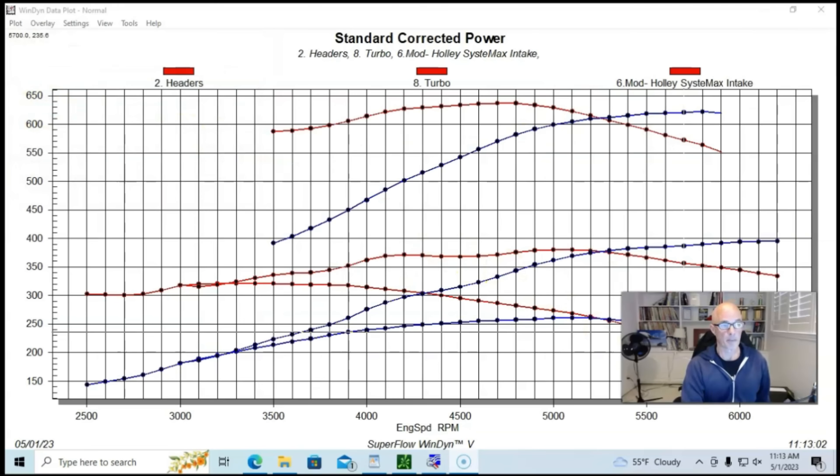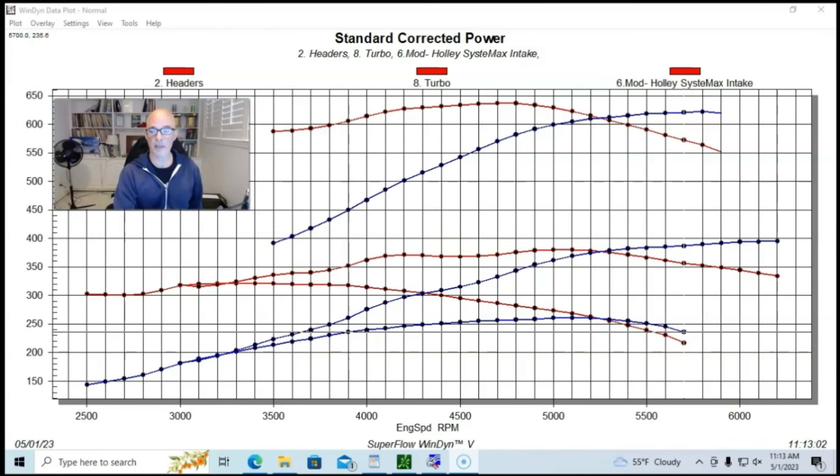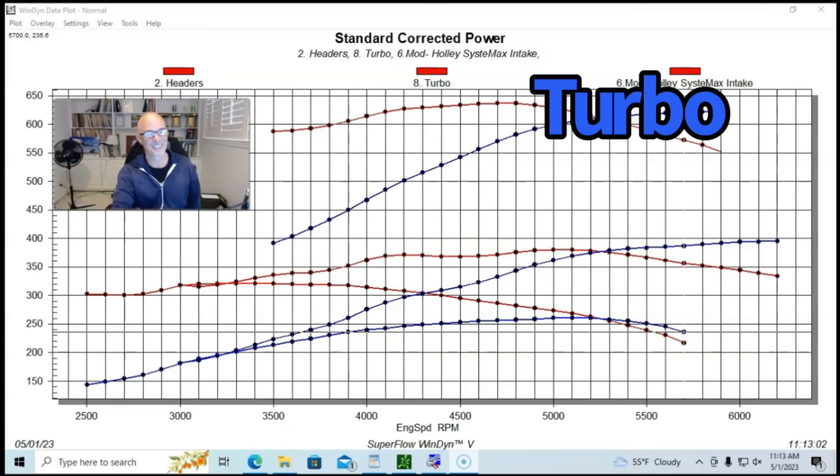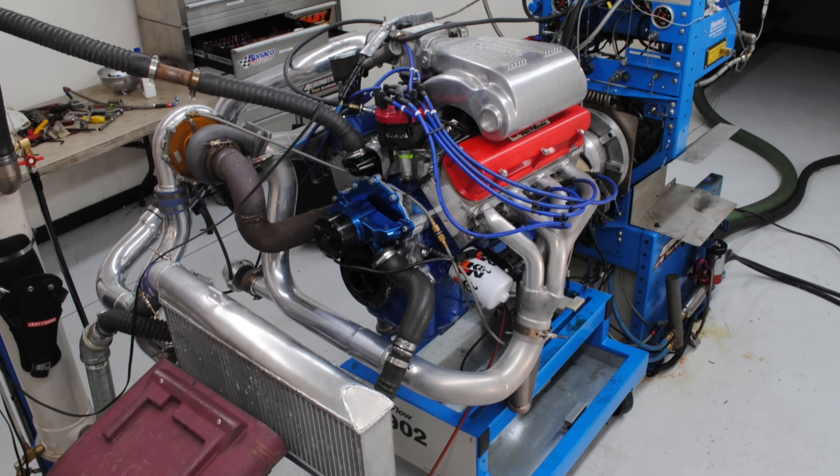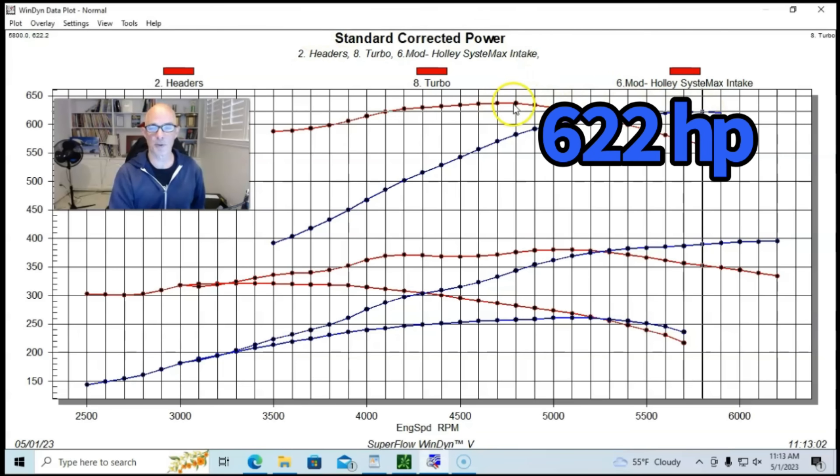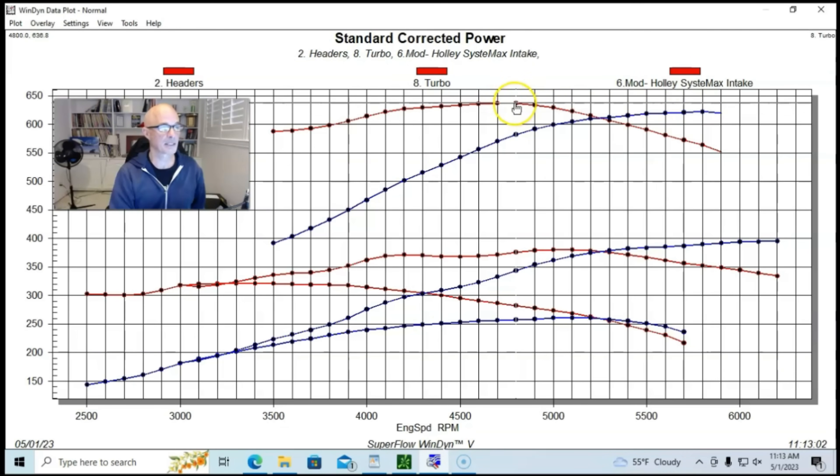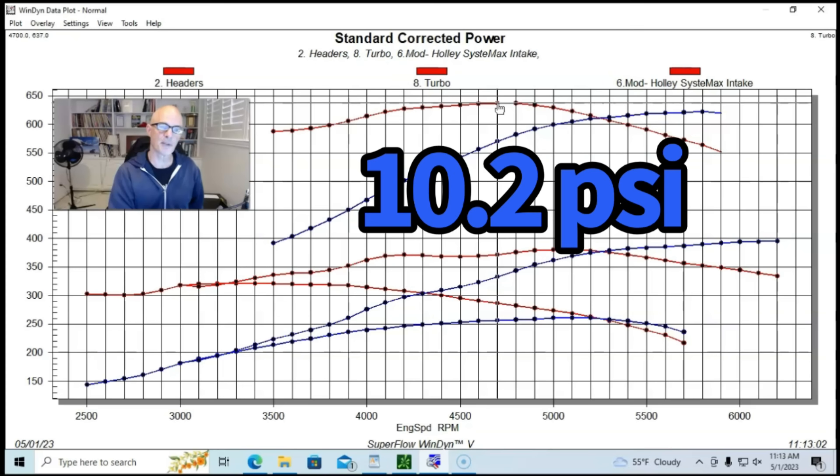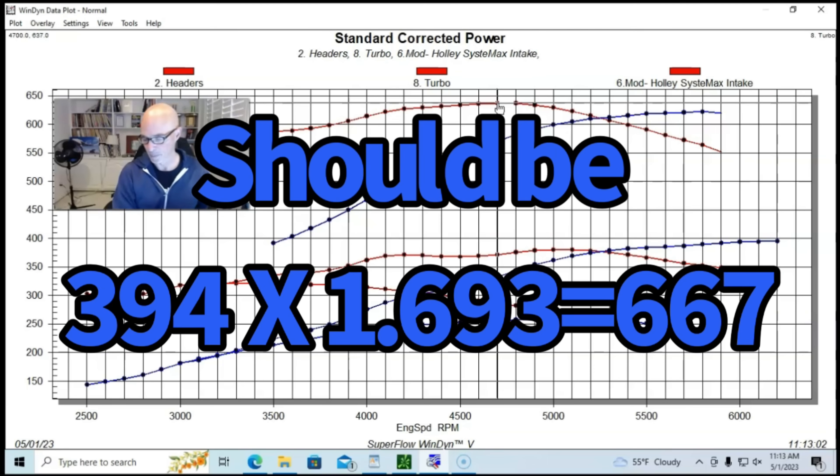But here is what happened when we added a turbo to our modified 302. You can see turbos are amazing. Made lots of power, 620 horsepower, 622 horsepower, and 637 foot pounds of torque. So it did very well. And this was at a little over 10 pounds. And if you do the math, it's not really following the formula. And I can explain why.